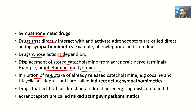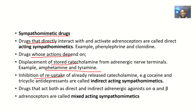These are indirect acting sympathomimetic drugs. They ensure that the neurotransmitter is in excess, but they are not acting directly on the alpha and beta receptors. They ensure the neurotransmitter is in excess — it could be that the already released neurotransmitter is not destroyed or taken back, or they basically increase the release of already stored catecholamines.